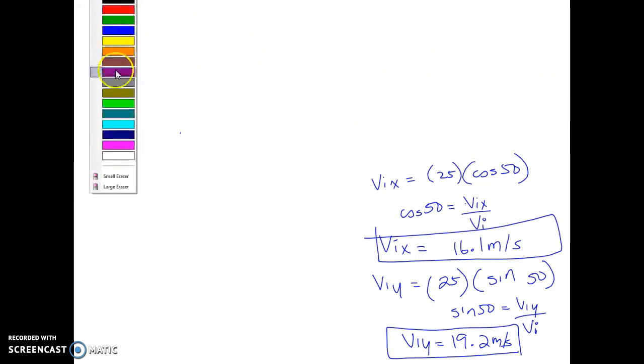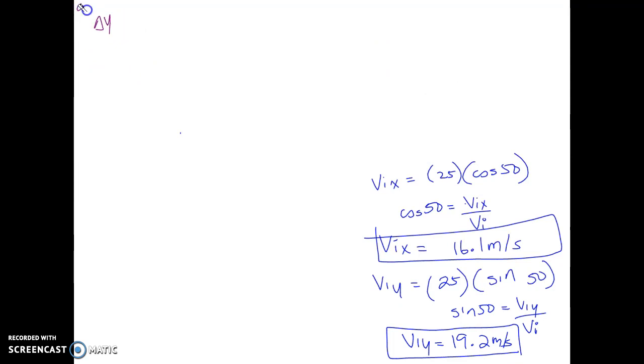To do my time, again we're going to do exactly the same formula that we've been doing all this time, which is delta y equals viy times t plus half a times t squared. Now remember the delta y was negative, so this is negative 30 meters.